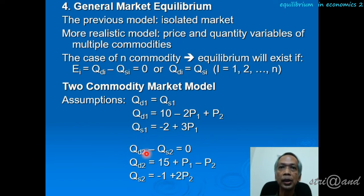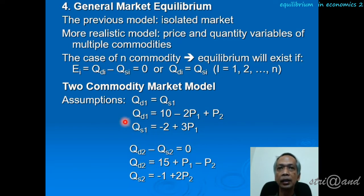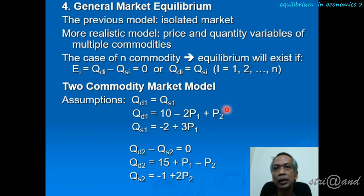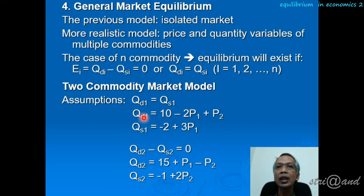The quantity demanded for commodity two minus the quantity supplied for commodity two should also equal zero. We should also pay attention to the equations here: the demand equation is not only a function of the price of commodity one, but also a function of the price of commodity two. If the price of commodity two increases, because the sign is positive, the quantity demanded for commodity one will also increase — this indicates substitution.